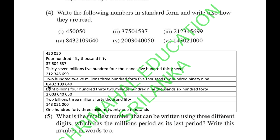Eight billion, four hundred thirty-two million, one hundred nine thousand, six hundred forty. Two billion, three million, forty thousand, fifty. One hundred forty-three million, twenty-one thousand.